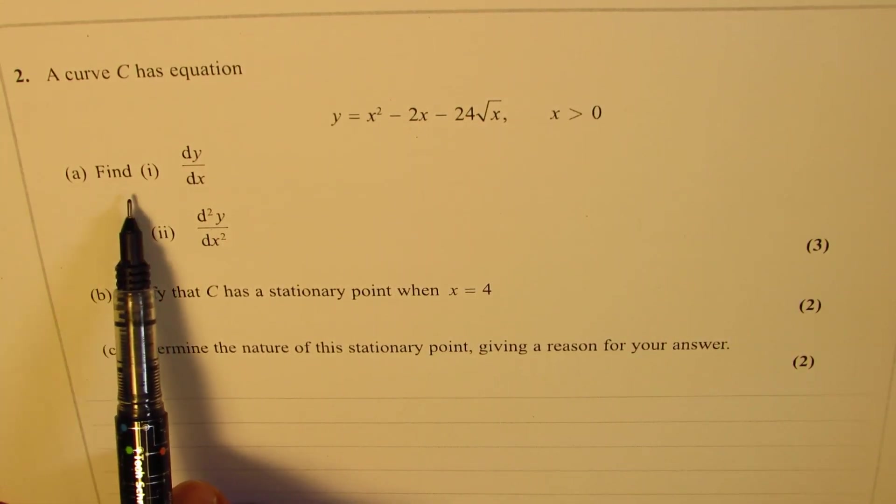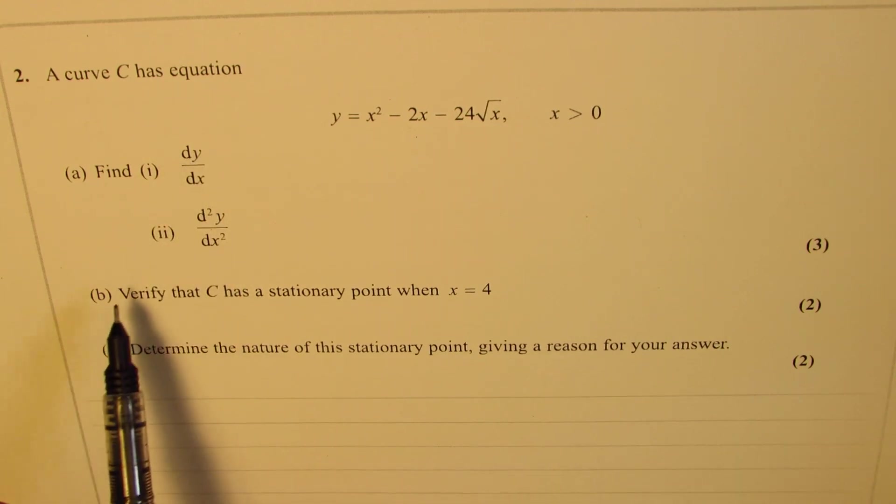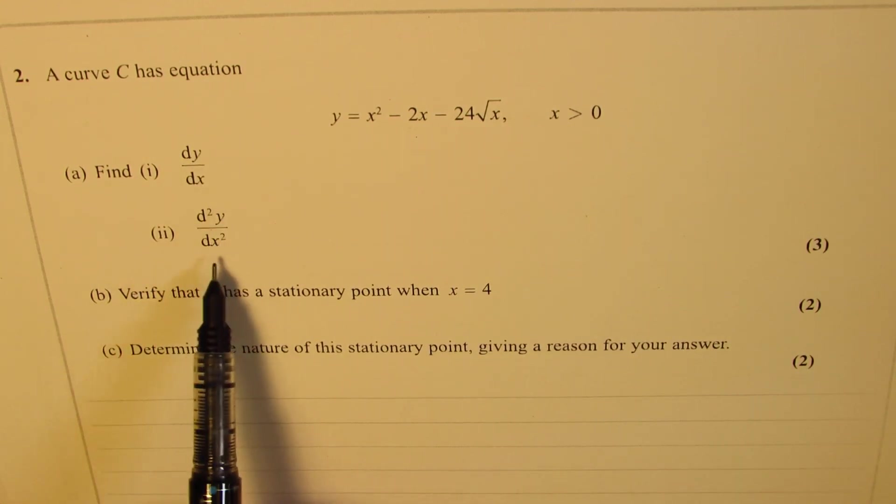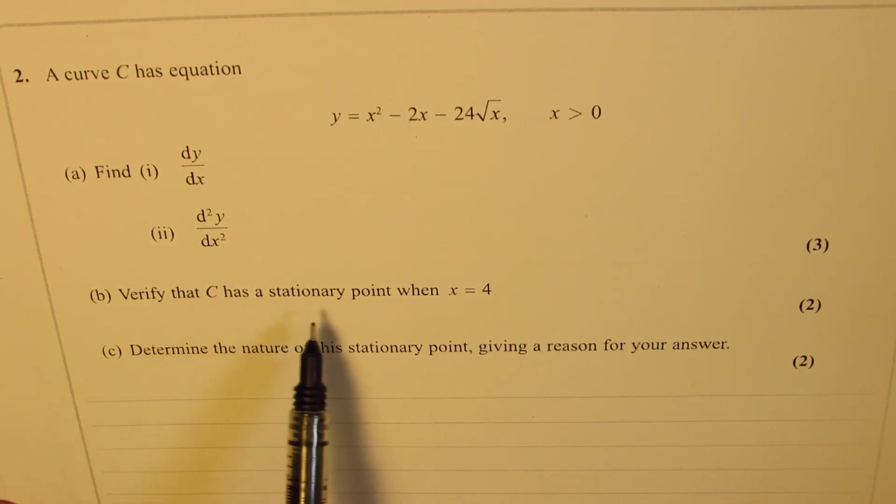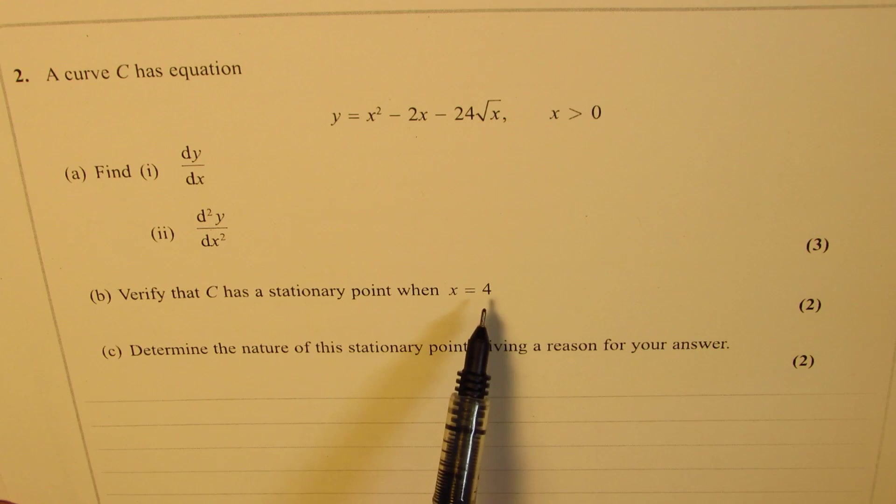The question here is: find the derivative dy/dx. Part 2 is to find d²y/dx squared. Part b is to verify that C has a stationary point when x equals 4.